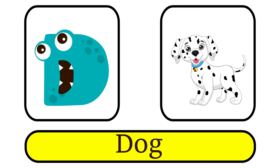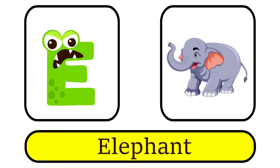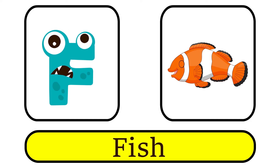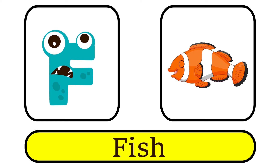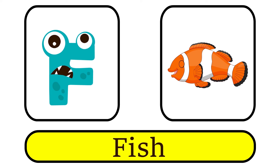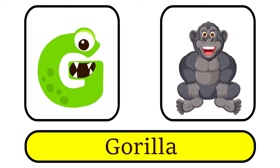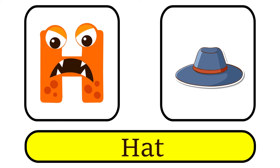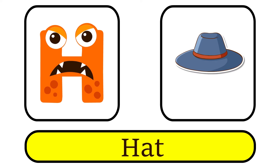E is for Elephant. A, A. F is for Fish. F, F. G is for Gorilla. G, G. H is for Hat. H, H.